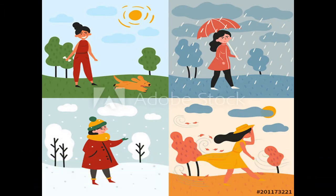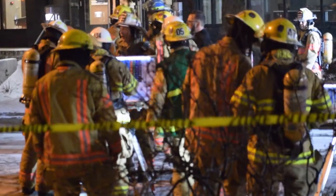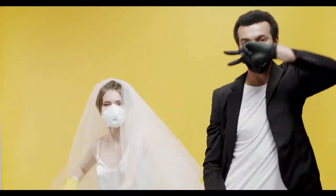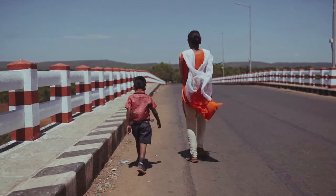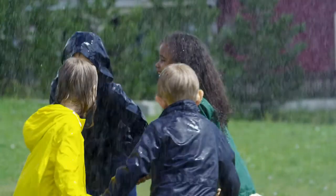Clothes also make us look smart and feel good. Clothes help us to identify the job of a person through their uniform. They also tell us about our culture. We wear clothes according to different seasons: in summers we wear light cotton clothes, in winters we wear woolen clothes, and in the rainy season we wear raincoats. So clothing depends upon our culture, season, and profession.